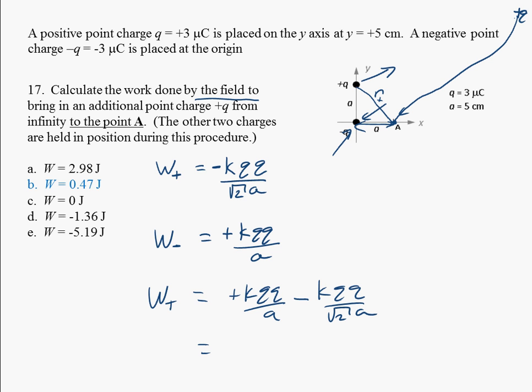So now we can just plug some numbers in here. We're going to get 9 times 10 to the 9th for K. Q's are 3 times 10 to the minus 6th, and they're the same, so we just square that. And then we get 1 over A, which is 5 centimeters,